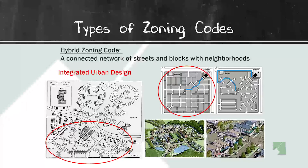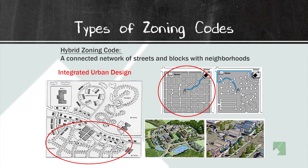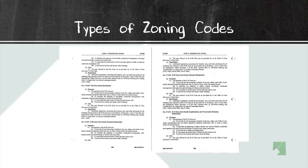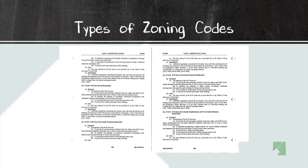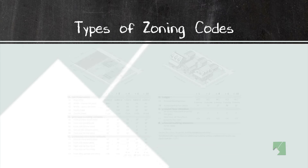A hybrid zoning code that uses both form-based and conventional can create neighborhoods, not subdivisions — interconnected neighborhoods where you can get from one place to another. Our current zoning code is very conventional, with lots of words and about a thousand pages. Our new zoning code could have many more charts and graphics, making it a lot easier to read and understand.